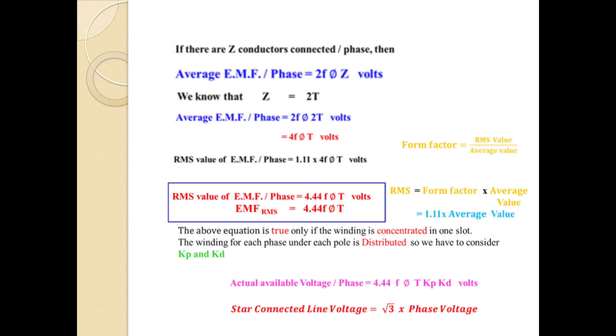If there are Z conductors connected per phase, then the average EMF per phase is 2FΦZ volts. We know that Z equals 2T, so the average EMF per phase is 2FΦ(2T) volts, which is 4FΦT volts.